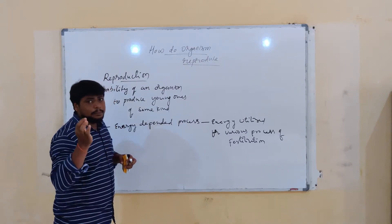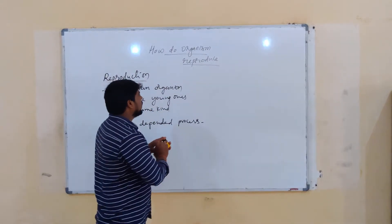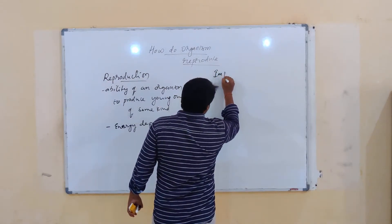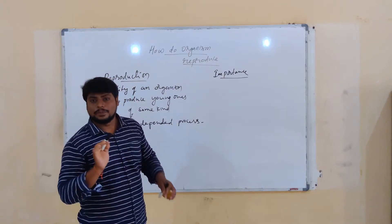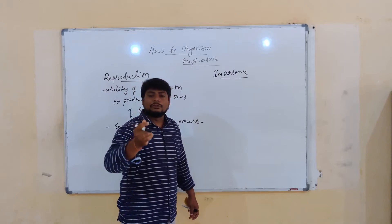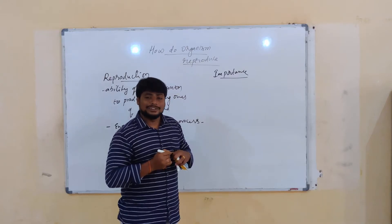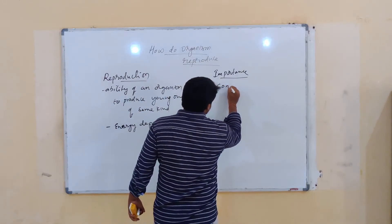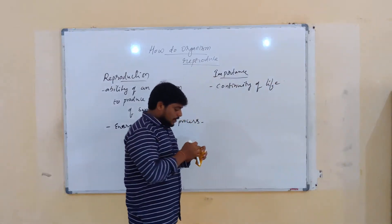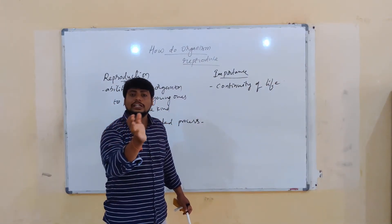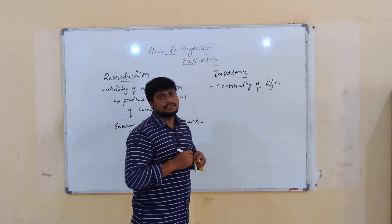Now, if you observe the importance of reproduction — why is the reproduction process important? The reproduction process is essential for the continuity of life on the earth. That is the main thing. For organisms to survive and to continue across generations, the reproduction process is very, very important and very, very essential.